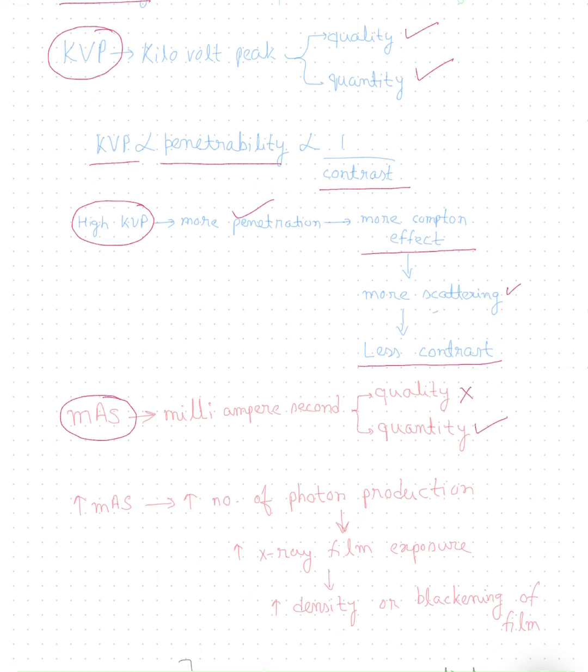When we increase the milliampere, it leads to an increase in the number of X-ray photons produced. This increased X-ray photon production leads to increased exposure of the X-ray film and increases the density of the X-ray film, meaning more blackening of the X-ray film.